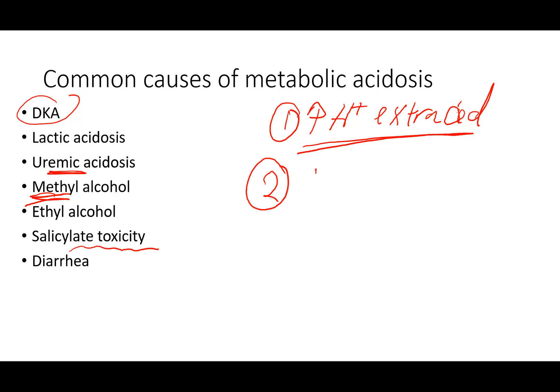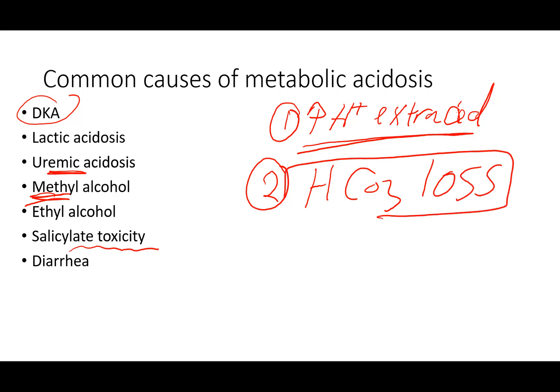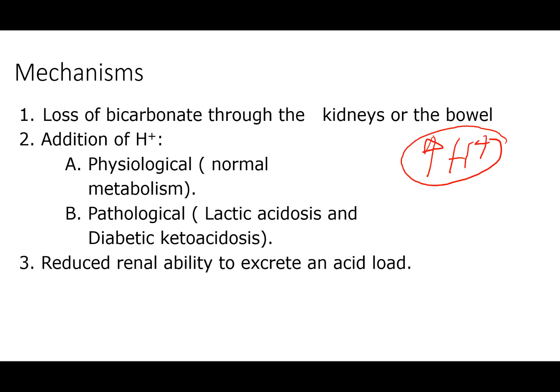Another mechanism is bicarbonate loss — for example, in diarrhea. So to have metabolic acidosis, we either have extra acid entering the circulation (DKA, lactic acidosis, uremia, methyl/ethyl alcohol, toxins) or bicarbonate loss. These are the two main mechanisms of metabolic acidosis.